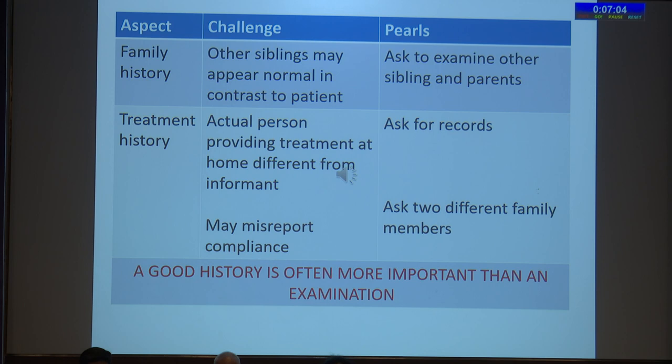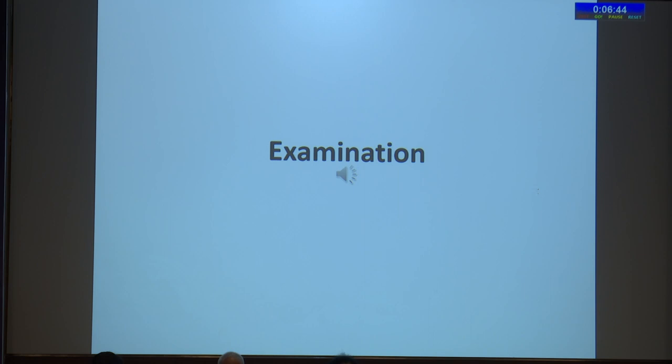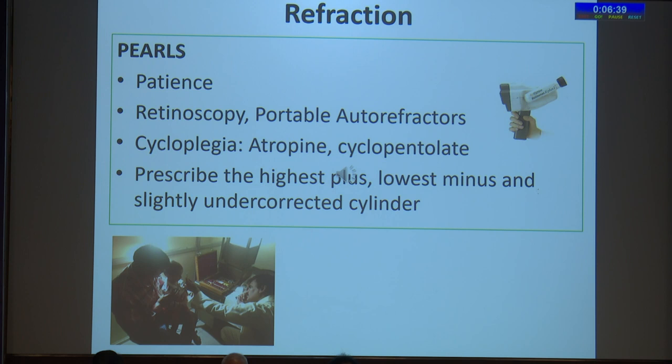Always try to examine the other siblings. Treatment history is also difficult to get because the actual person providing the treatment may be different from the informant, so ask for records. Parents may also often misreport compliance, particularly for example with patching therapy.